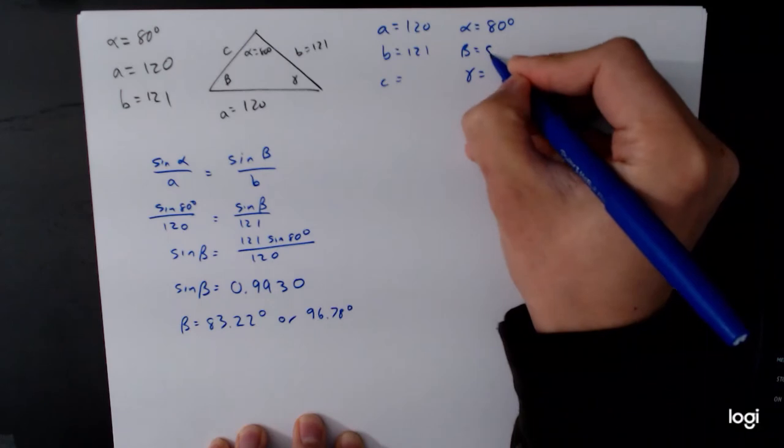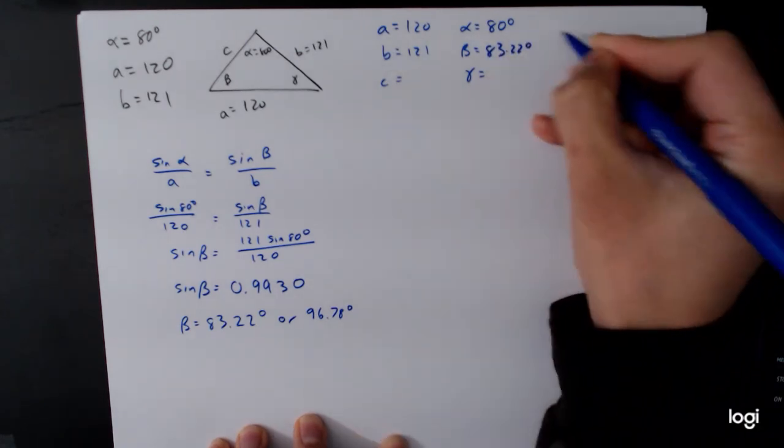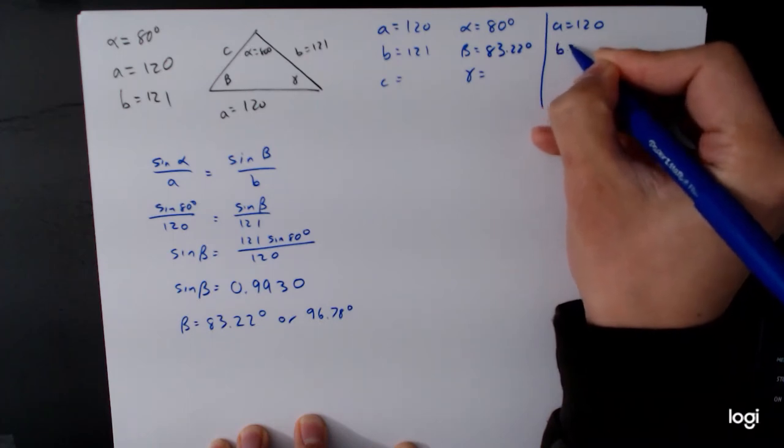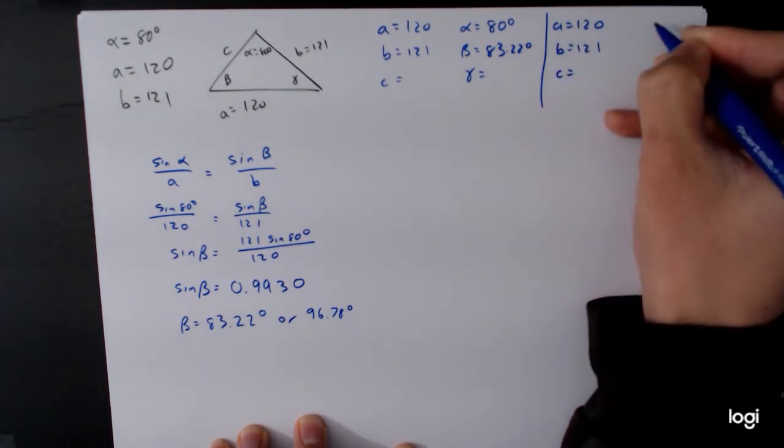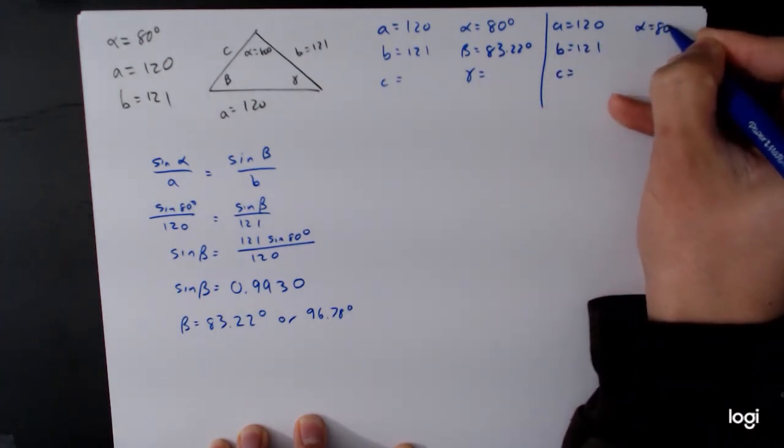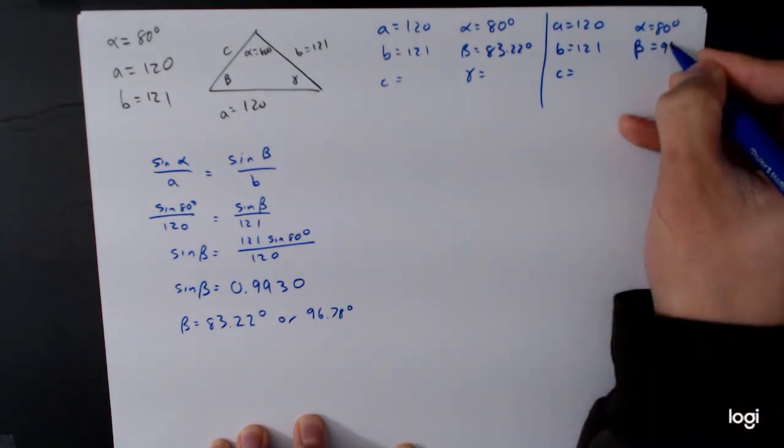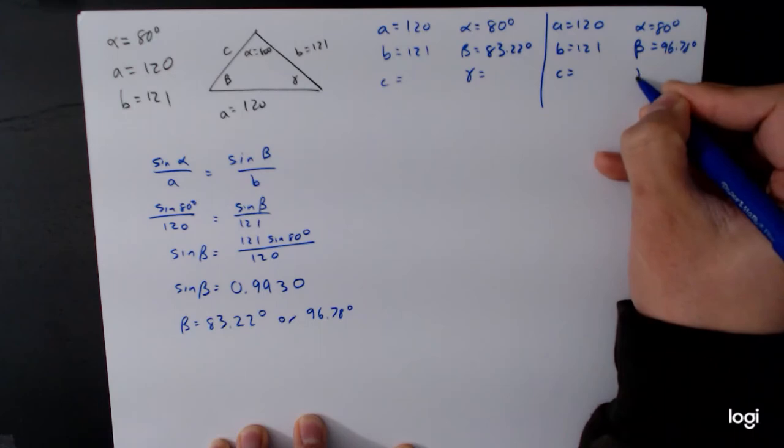And so let's fill this information in, 83.22 degrees, and then we have to set up another chart, 120, B is 121, C is unknown, alpha is 80 degrees, beta is the other value, 96.78 degrees, gamma is unknown.